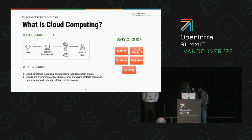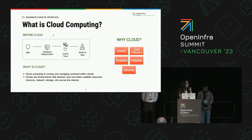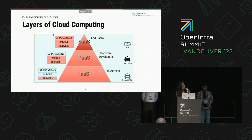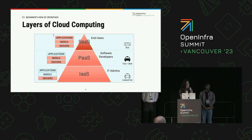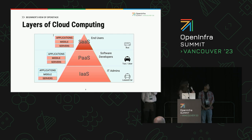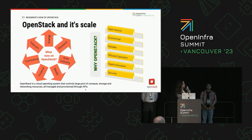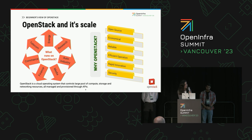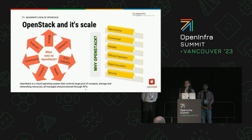Starting from the very basic — what is cloud computing? I think all of you are aware about it. Just a slide about cloud computing and the perks because of which we are sitting here today. These are the layers of cloud computing. OpenStack and Kubernetes lie at the very bottom level — that is the IaaS level. There's a simple analogy about lease, car, taxi, bus — it's fun to think about layers of cloud computing in that way. OpenStack is a tool to manage and create small or large, public or private cloud, and this explains the scale of OpenStack and why we are at the OpenInfra Summit focusing on OpenStack today.